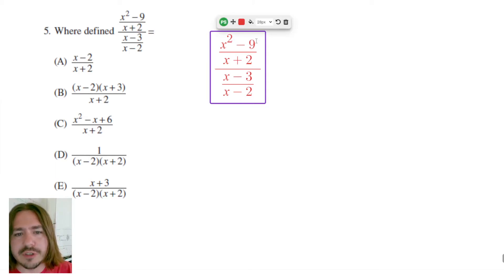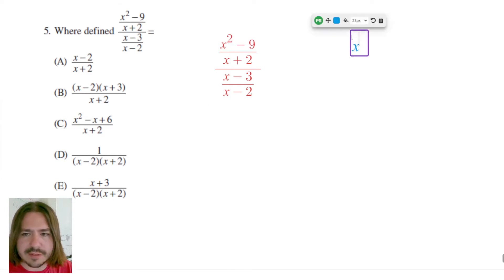The first thing I'm going to do is rewrite this division problem as a multiplication problem. Also, I'm going to be thinking about rewriting X squared minus 9. Over here to the side, I'm going to write X squared minus 9. You might notice that this is a difference between two squares.